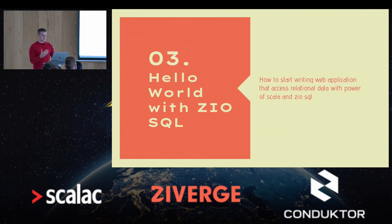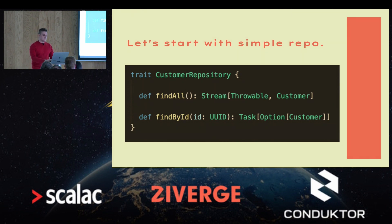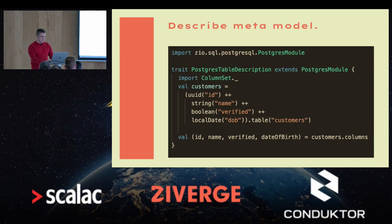Now let's implement Hello World with ZioSQL. We'll implement a simple customer repository with two methods: find all customers, and find a customer by ID. Before we do that, we need to describe our meta model.